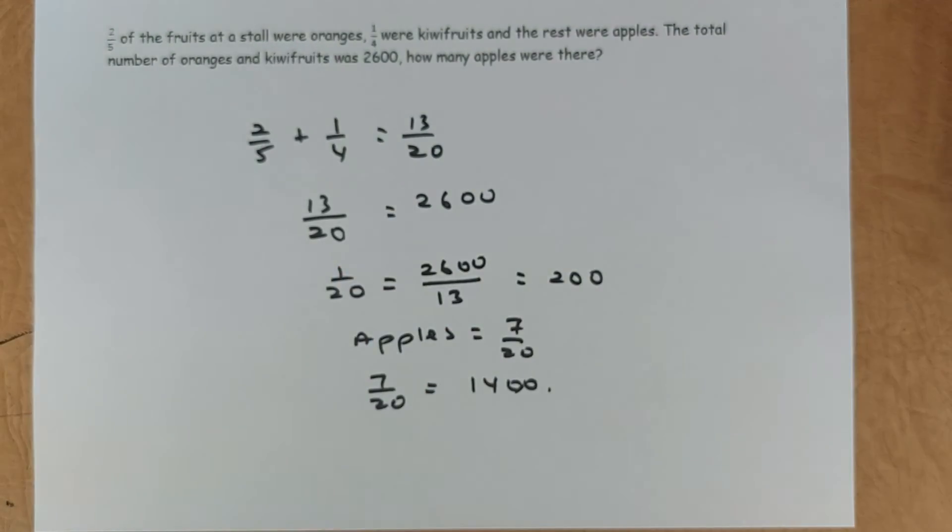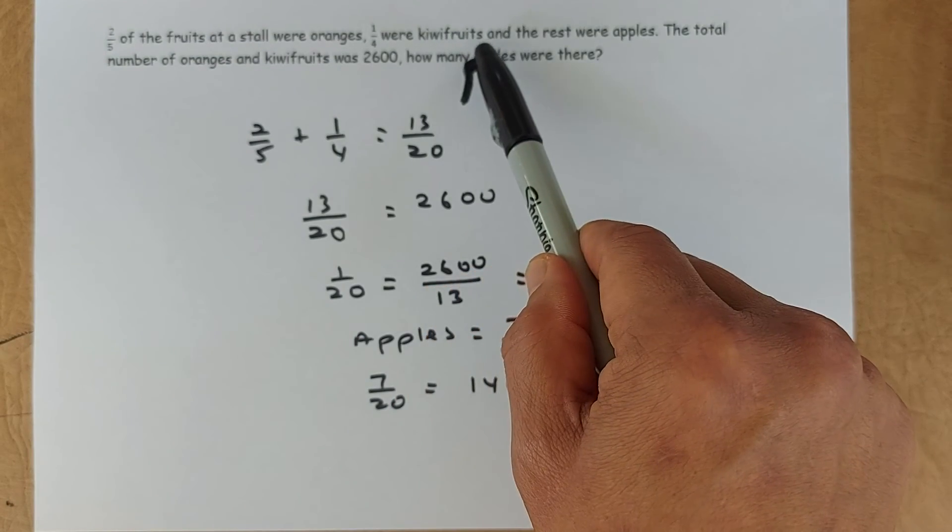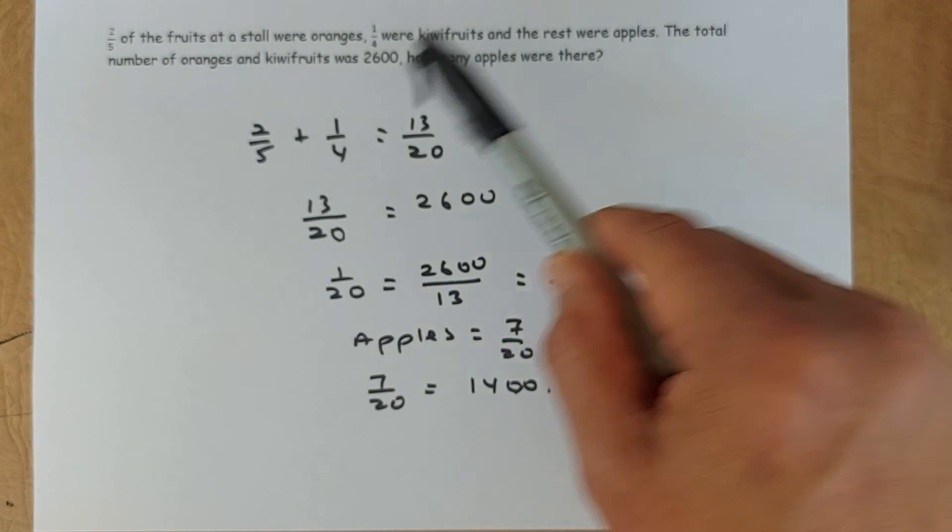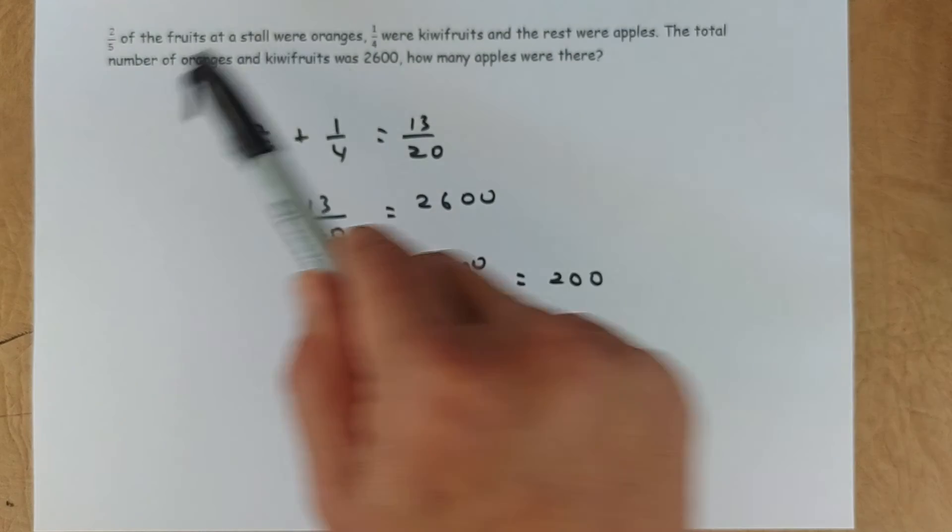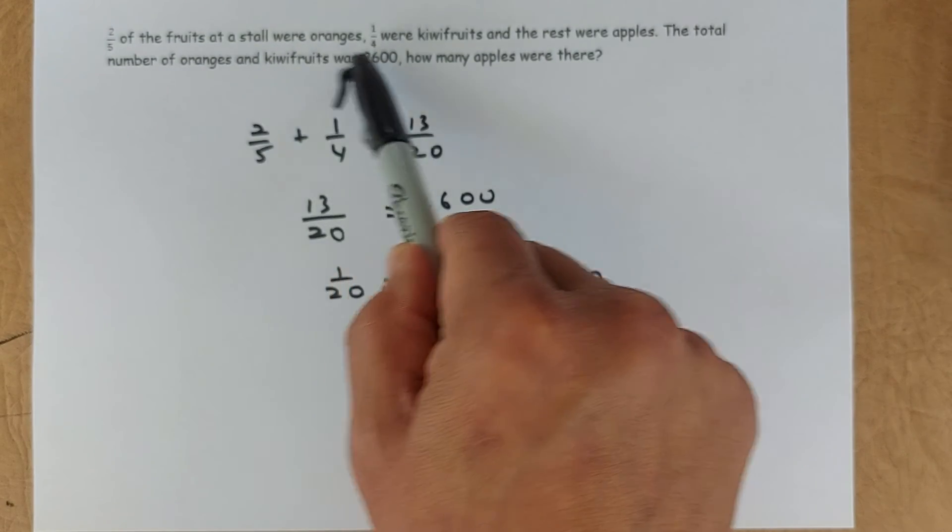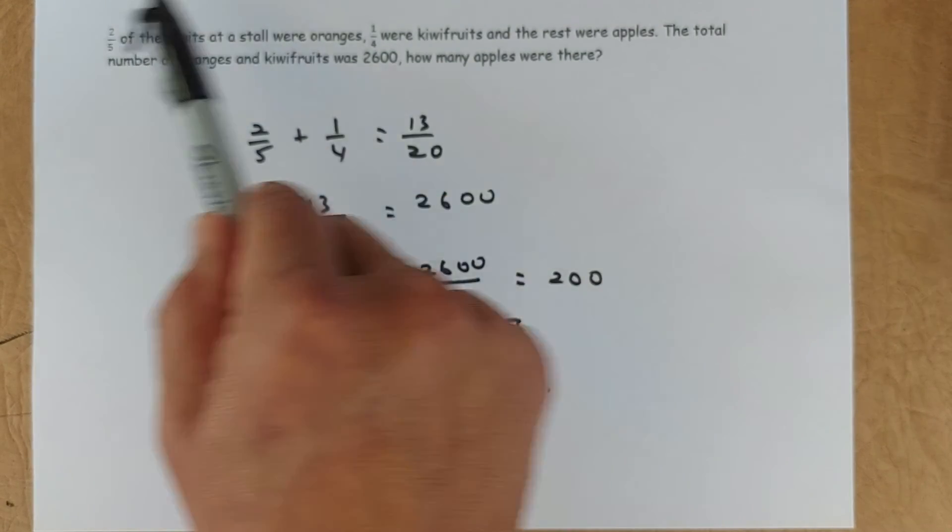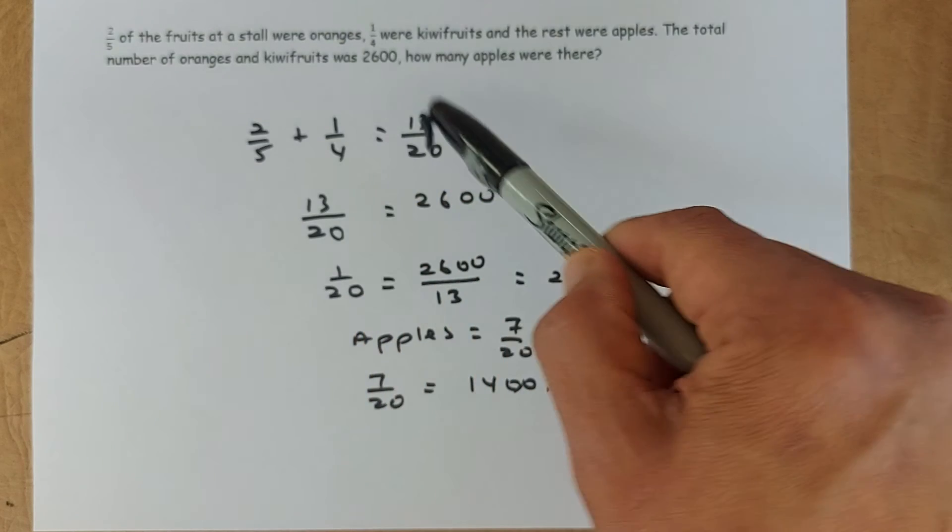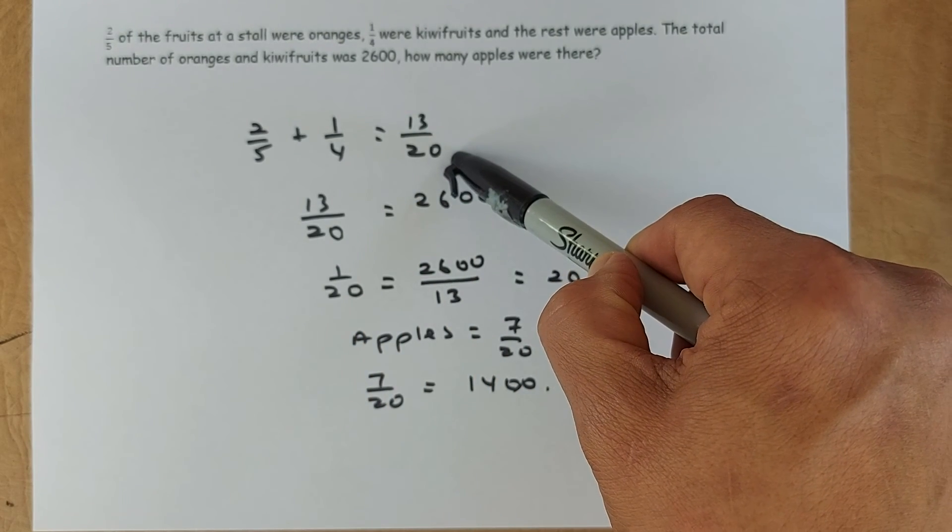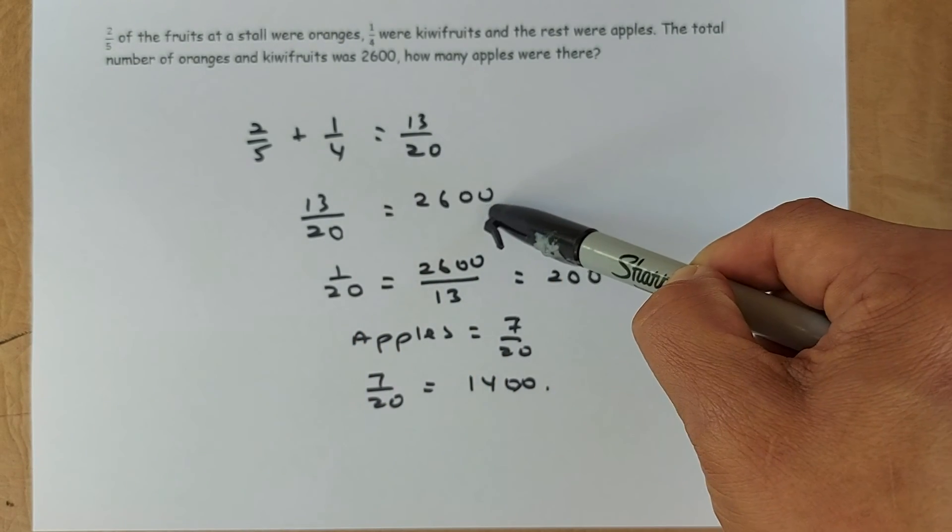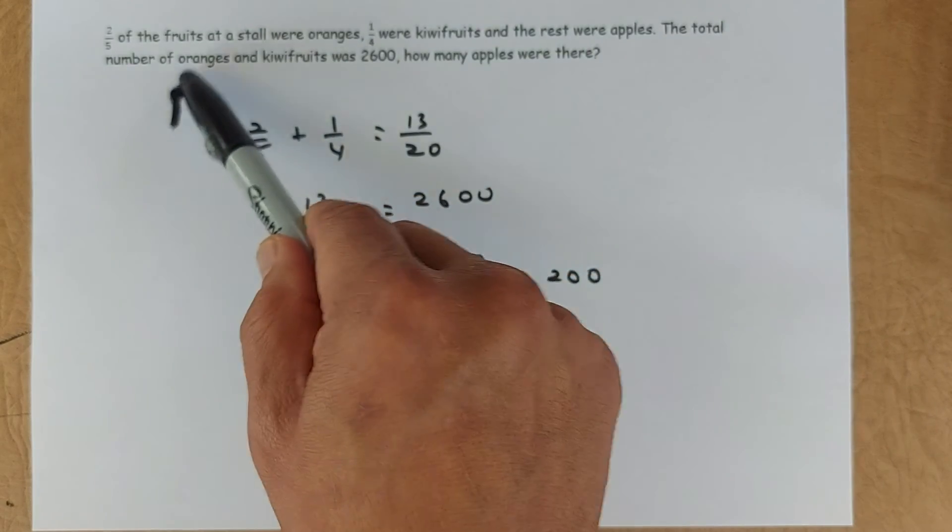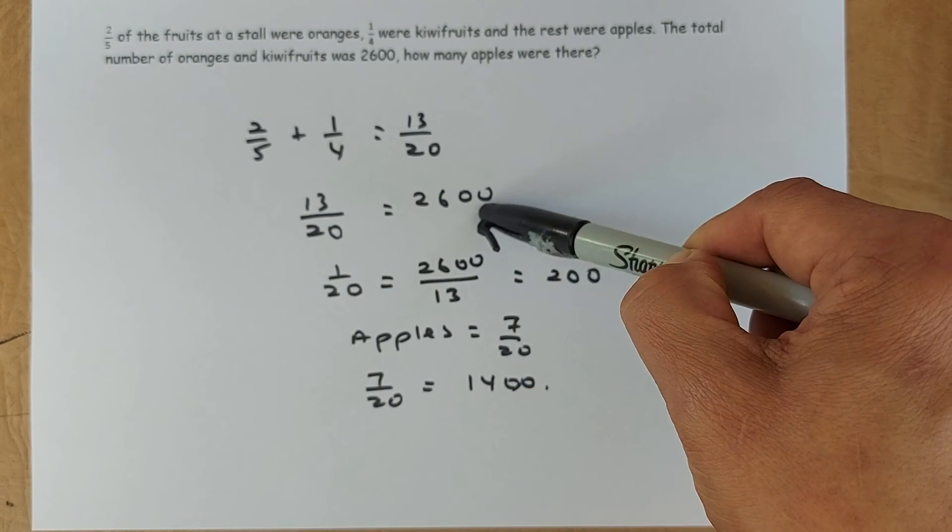Two fifths of the fruit in the store were oranges. One quarter was kiwi fruit and the rest were apple. So you first add, because they say the total number of oranges and kiwi fruit was 2,600. So this fraction plus this fraction will give you 13 over 20. Put in your calculator.